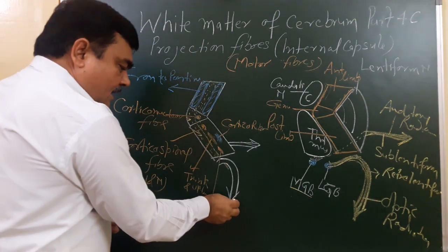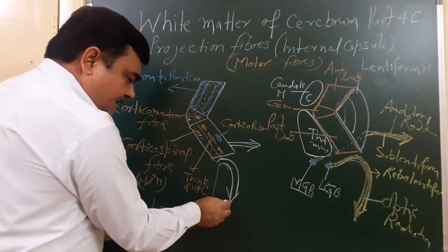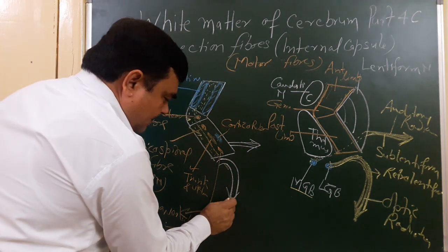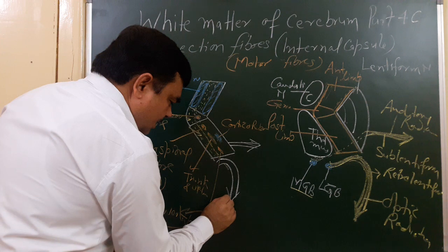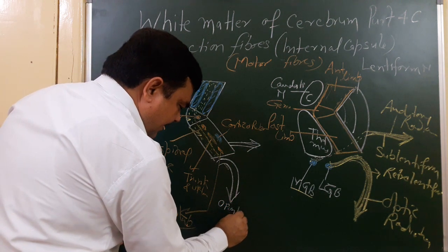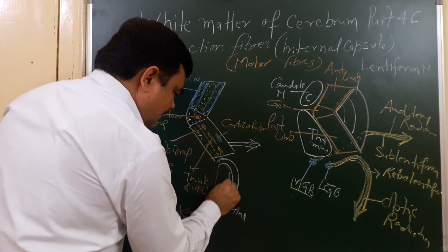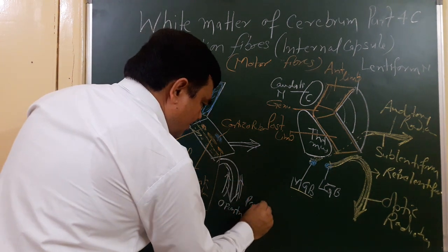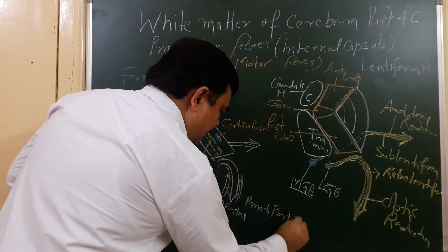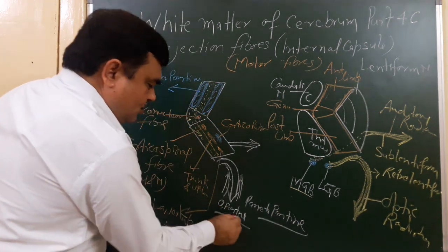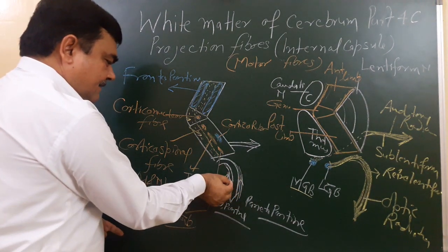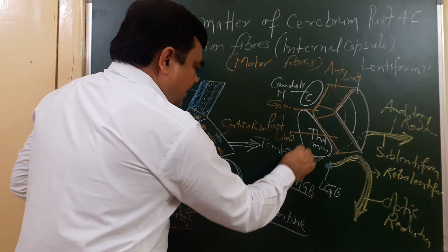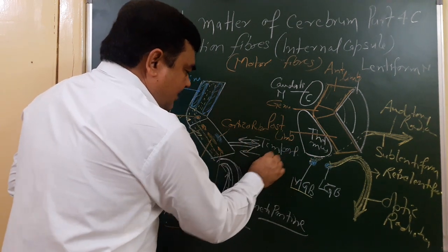In the retrolentiform part, the corticocontine fibers come from the cortex — specifically from the occipital lobe and parietal lobe — forming the occipitopontine fibers. Here we also have temporopontine and parietopontine fibers.